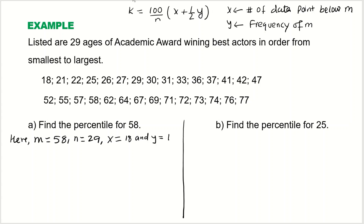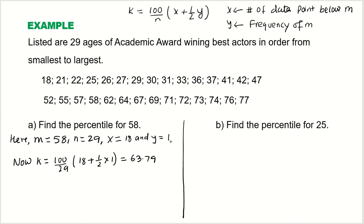Now we find k using the formula: k = (100 / n) × (x + 0.5y) = (100 / 29) × (18 + 0.5 × 1). Simplifying with a calculator gives 63.79. Rounding to the nearest whole number, k = 64. This means 58 is at the 64th percentile.